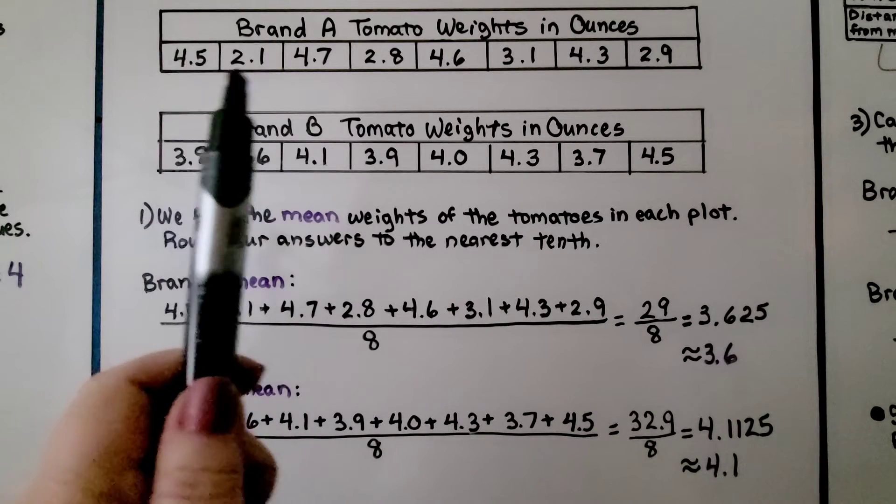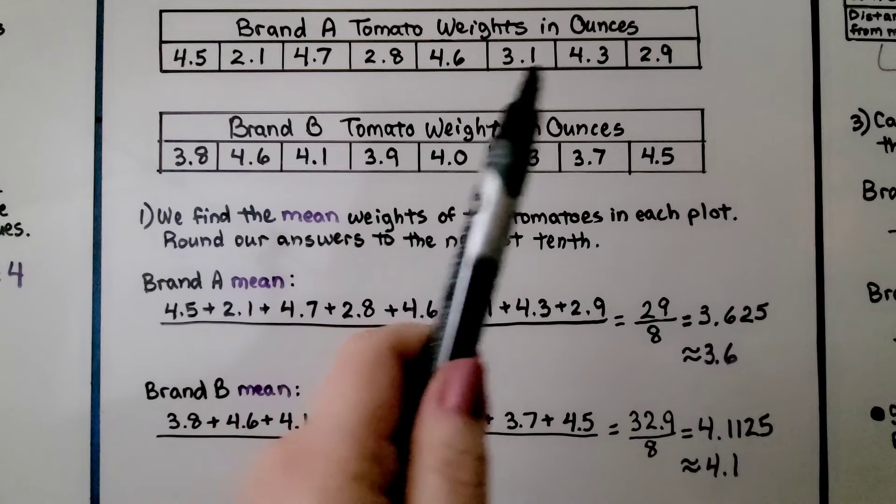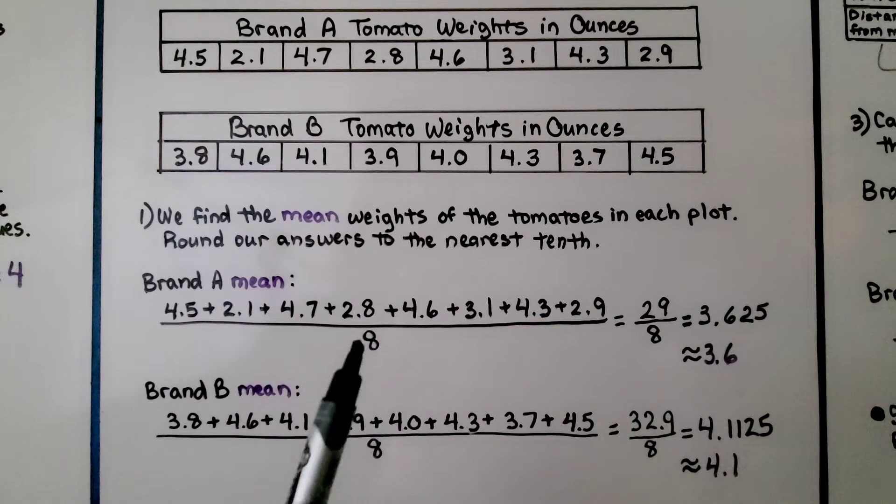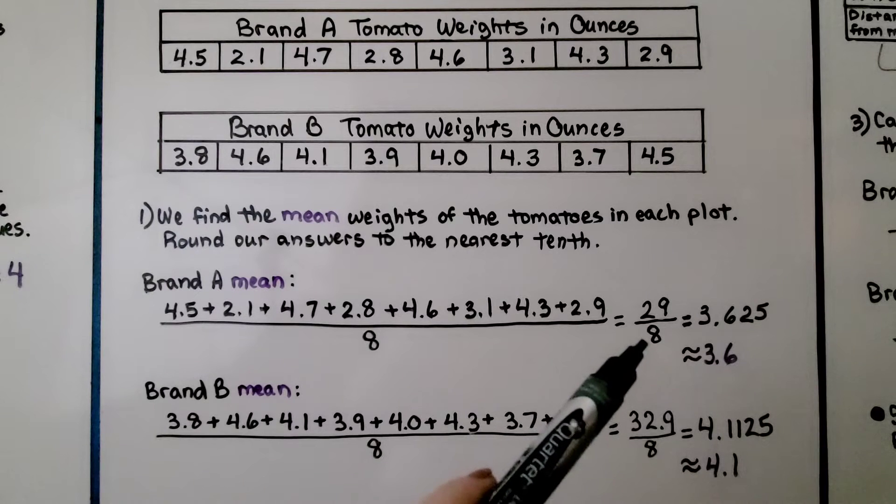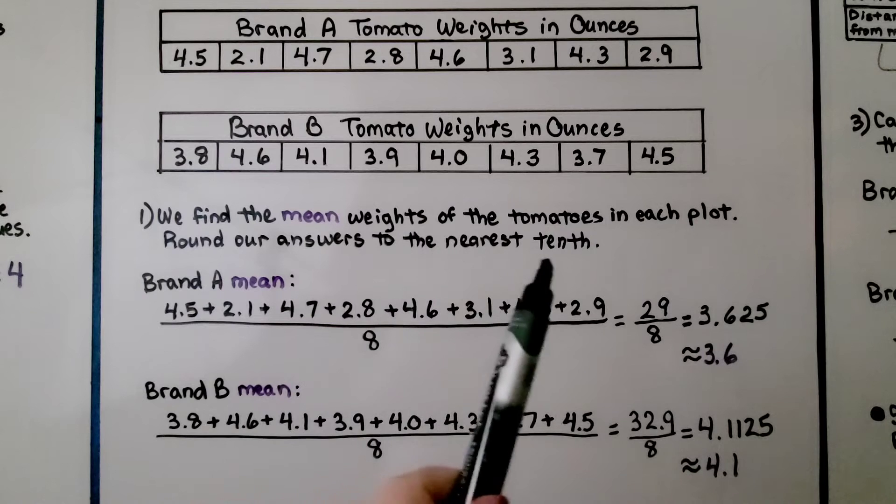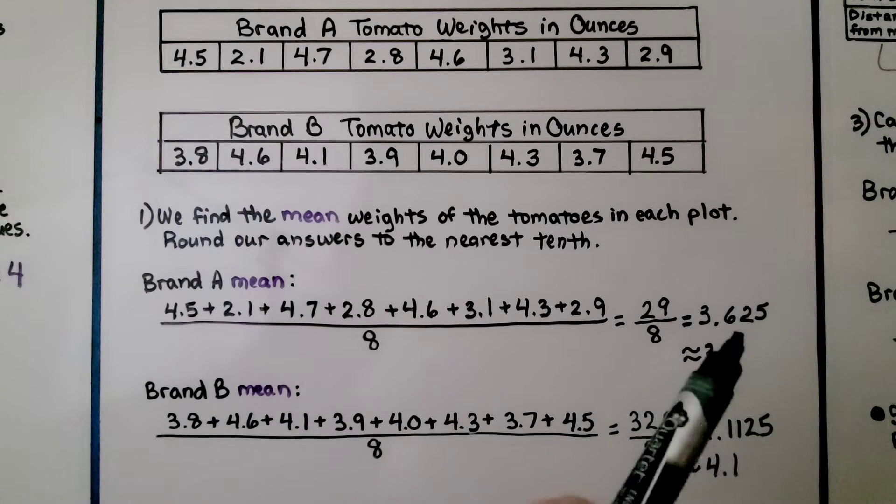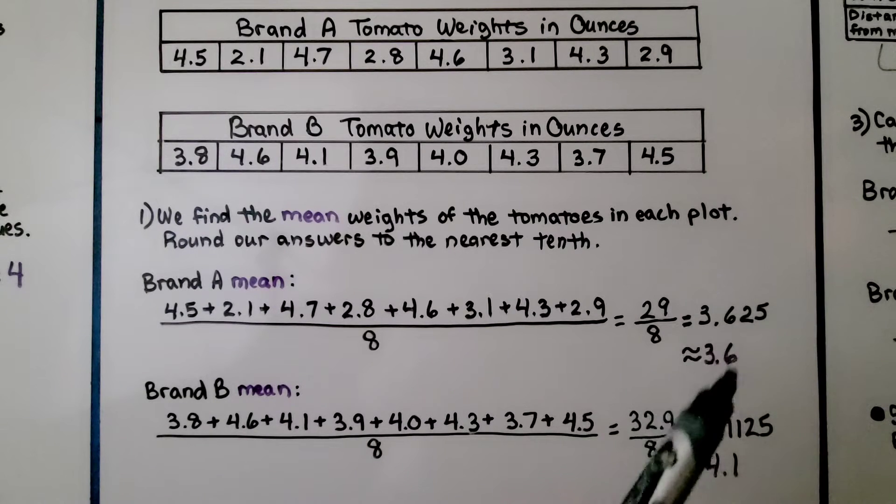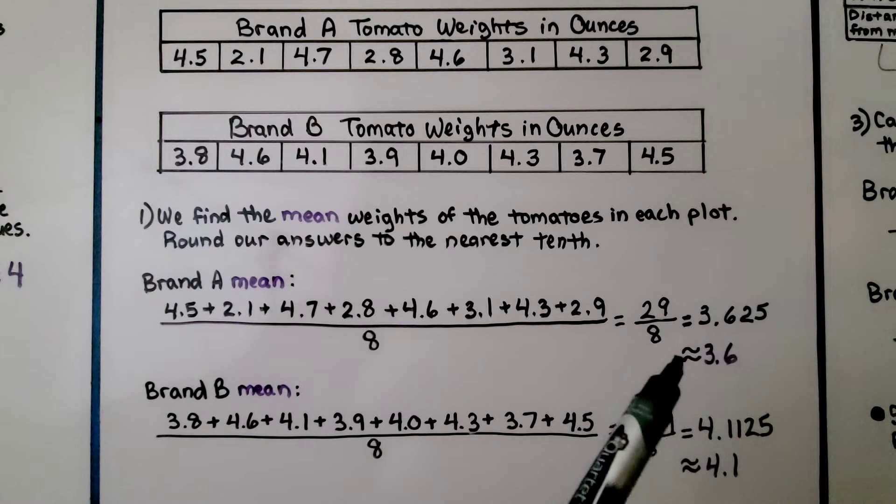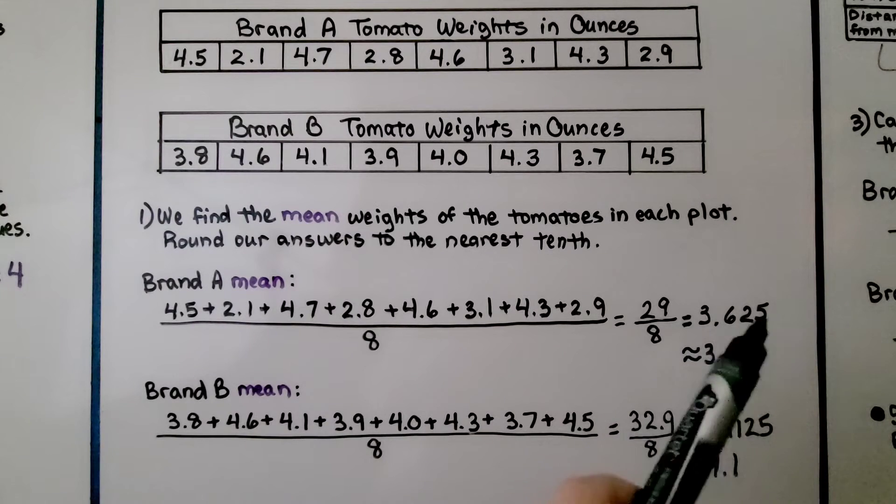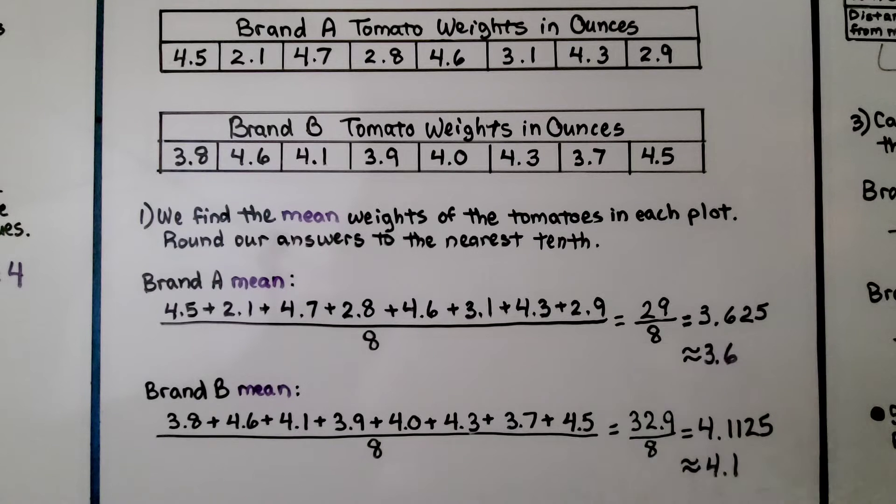We add them up and we get 29. And because there's 1, 2, 3, 4, 5, 6, 7, 8 values, it's going to be divided by 8. And we get a decimal, 3 and 625 thousandths. It's telling us to round our answers to the nearest tenth. This 2 tells the 6 to stay the same, so we're going to have 3 and 6 tenths. And we're going to use an approximation symbol because we took off the 2 and the 5. So it's approximately 3 and 6 tenths.